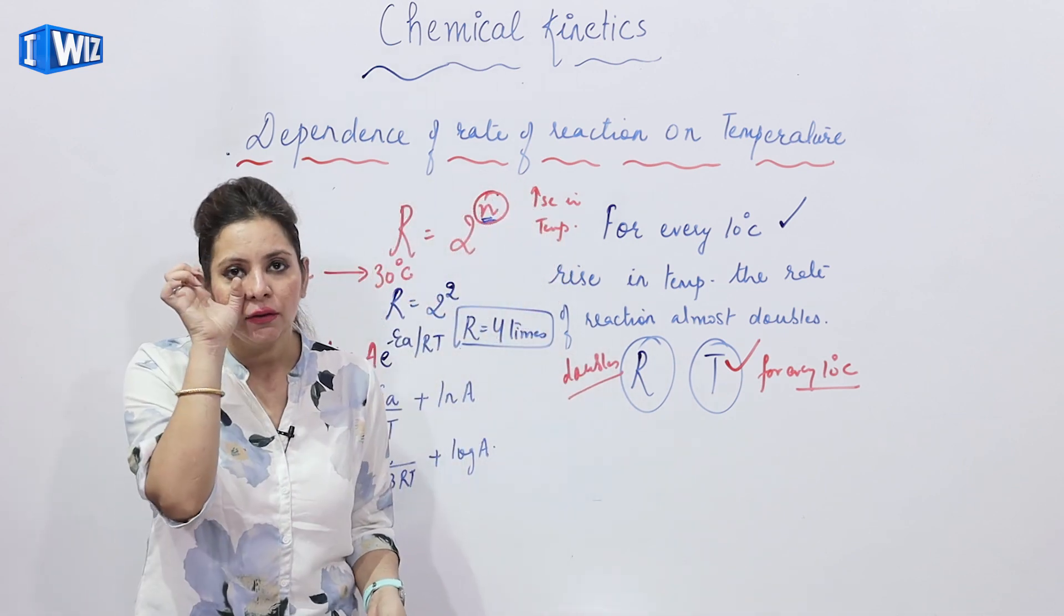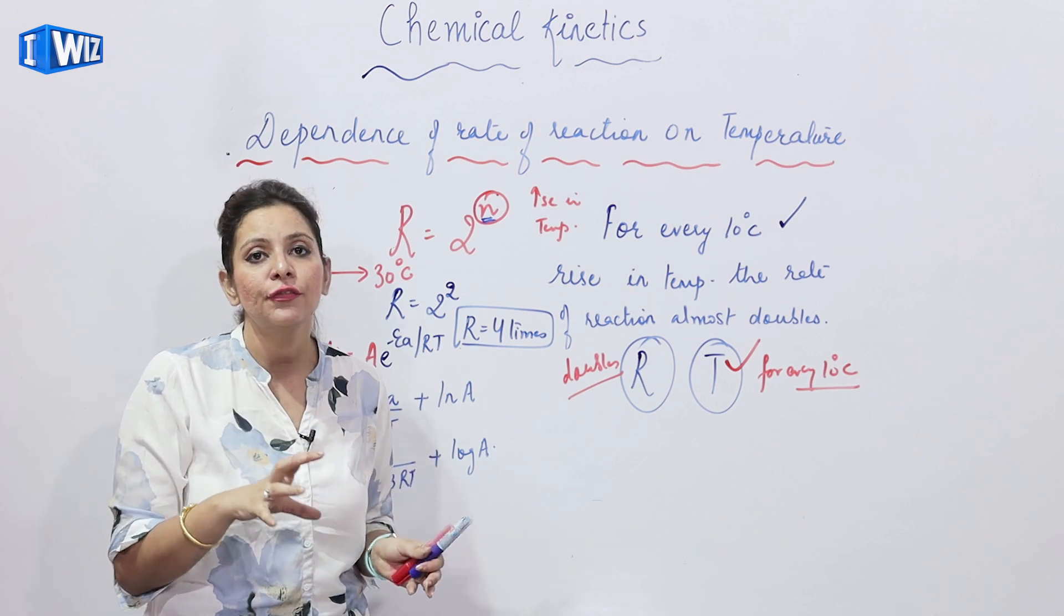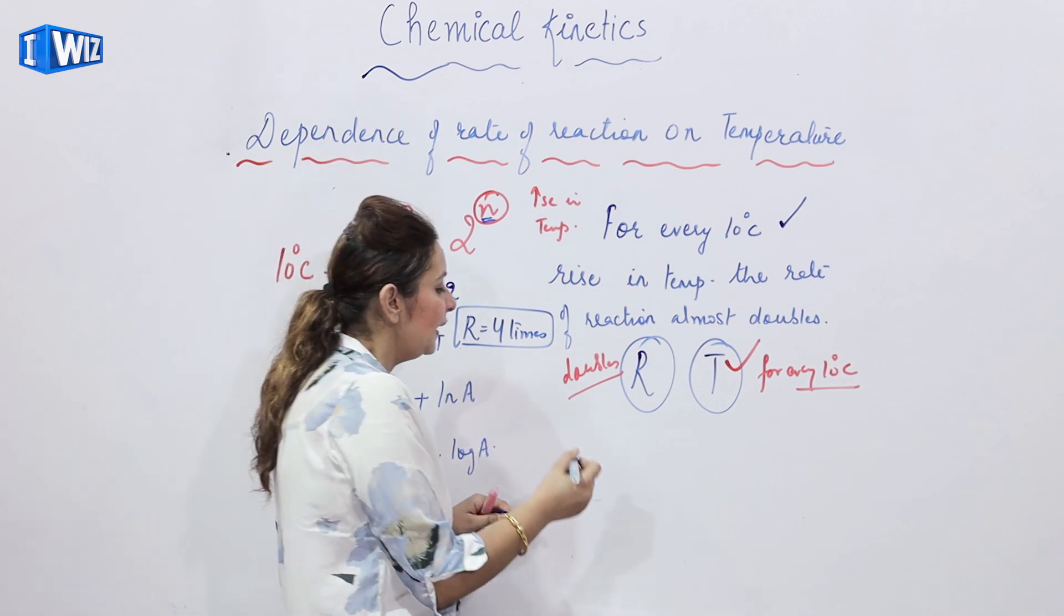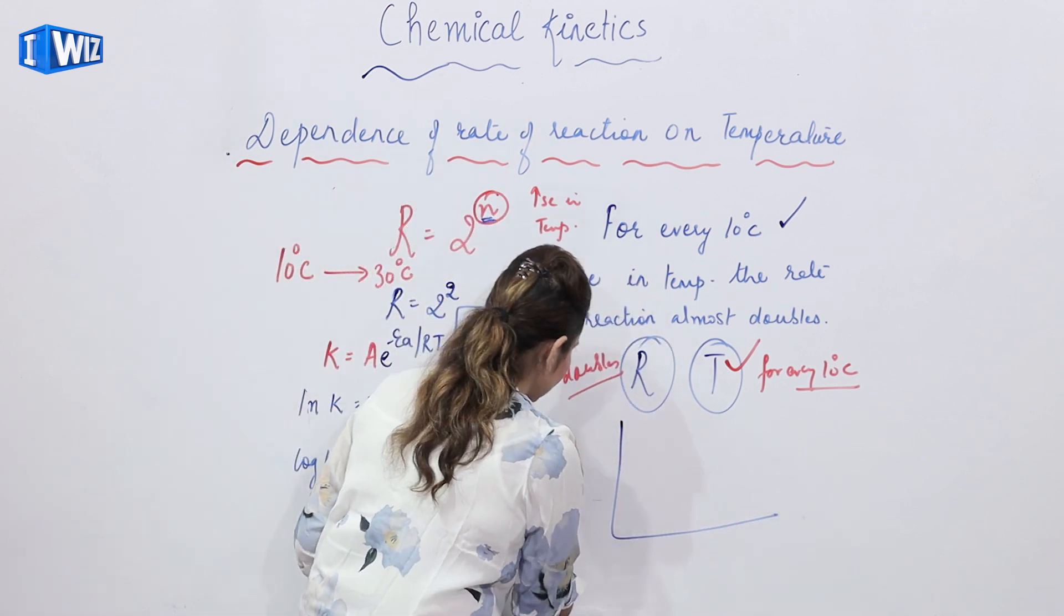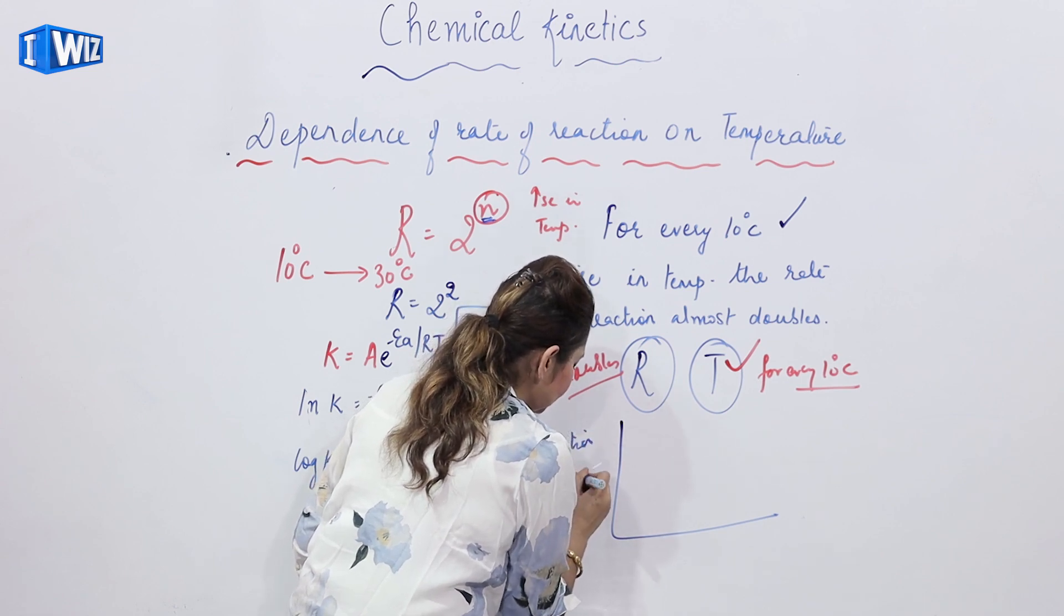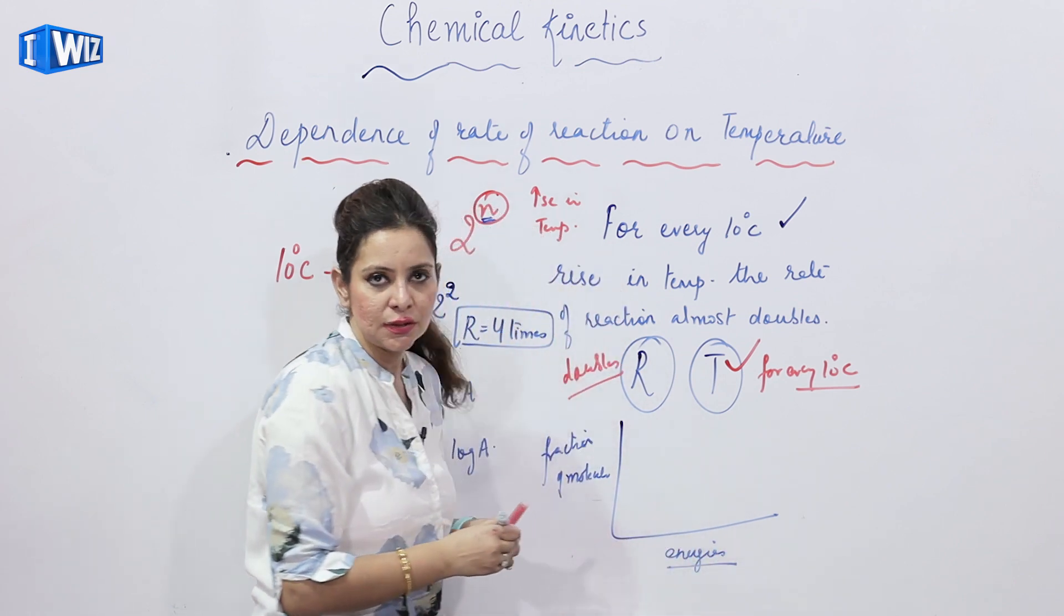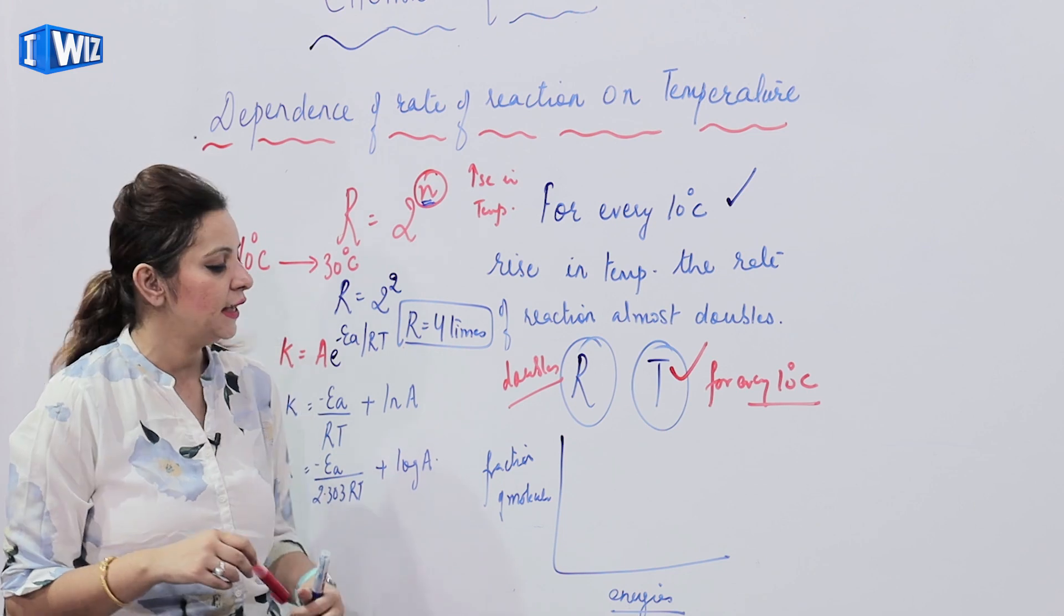And you know what is the reason behind? We can explain on the basis of Maxwell Boltzmann graph related to the speed. Let's say we plot a graph where we take a fraction of molecules and we make a graph with respect to their energies.